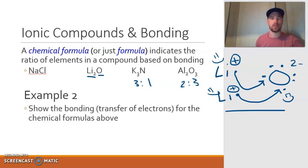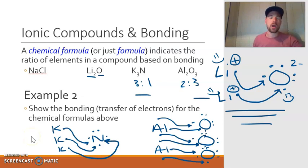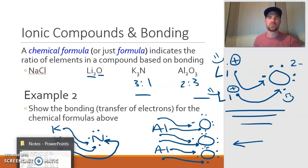In example 2, it's asking you to show the bonding, or the transfer of electrons, for the chemical formulas shown above. I already showed it for NaCl and Li2O. It's asking you to do the same thing for the other two. Pause the video and hit play to get the answers. We already know how many of each element we need based on the formula. We're simply drawing the elements with their Lewis dot symbol and showing the electrons being transferred. Three potassiums give up their one electron to satisfy the one nitrogen. For aluminum oxide, the six electrons from the two aluminums get transferred amongst the three oxygens.